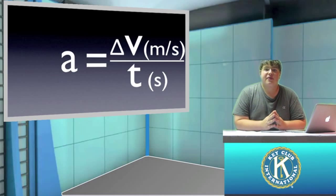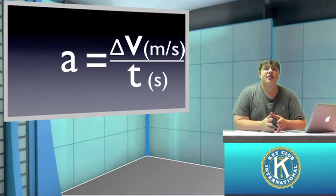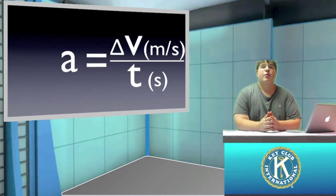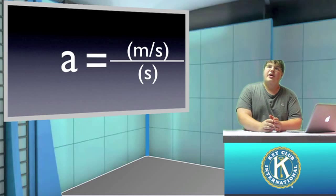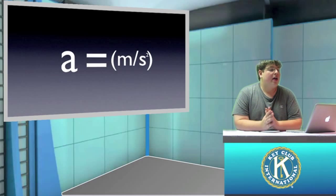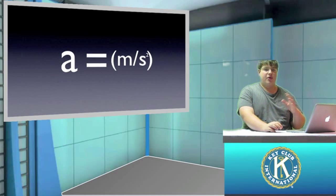Since velocity is always measured in meters per second, the change in velocity is in meters per second. And time we always measure in seconds. So the units for acceleration are meters per second over seconds, or meters per second squared. Note that there is no difference between writing meters per second over seconds or meters per second squared — they both mean the same exact thing and are equally valid forms of writing it.